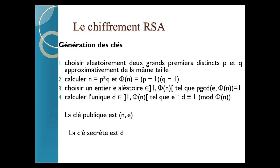Naturellement, au départ on a commencé avec des petites clés, mais dès que la performance et la puissance des ordinateurs a augmenté, on a augmenté la taille de la clé. Plus tu augmentes la taille de la clé, les nombres deviennent plus grands et donc la factorisation devient encore plus difficile. C'est ce qui confirme que mathématiquement, il y a une relation entre la clé publique et la clé privée, sauf que pratiquement, il est quasiment impossible de trouver la clé privée à partir de la clé publique.